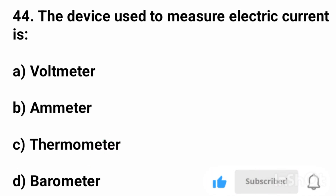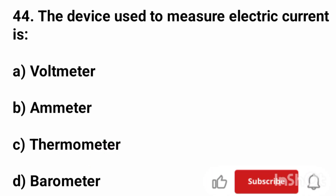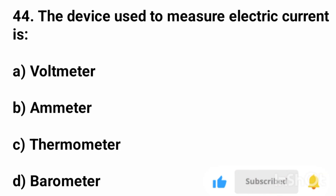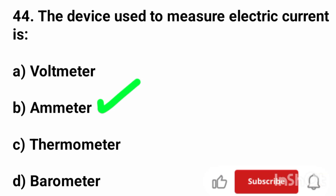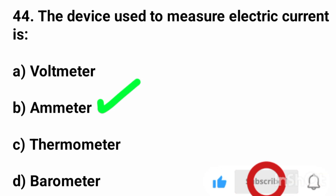Question number 44. The device used to measure electric current is? The correct answer is option B, ammeter.